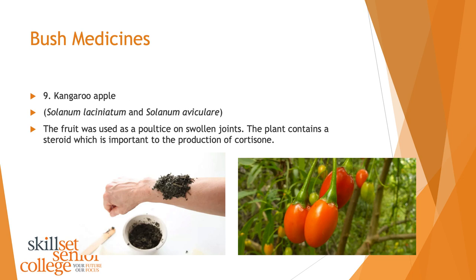Kangaroo apple — they kind of look like little capsicums. The fruit was used as a poultice on swollen joints; you might see similar preparations in fancy soap or cosmetic shops as a paste. The plant contains a steroid which is important in the production of cortisone. Steroids are quite strong medicines, so it's incredible to think a plant contains that chemical element naturally.